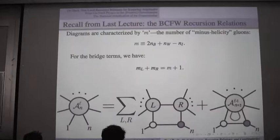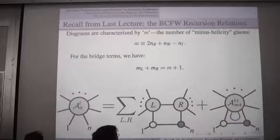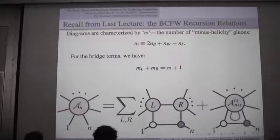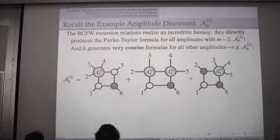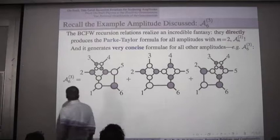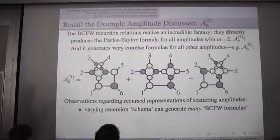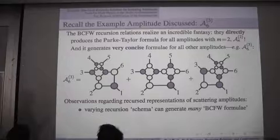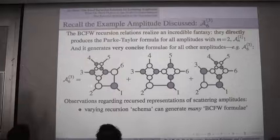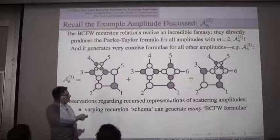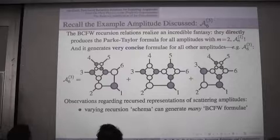We have a lot to cover, so let's get started. Where we left off last time: for everything today, I'm not going to talk about loop level anything—it's just the tree level part of the recursion. I'm just going to be talking about graphs like this. BCFW gave you different-looking formulas for the same expression. The graphs looked very different, and doing BCFW in lots of different ways naturally led to interesting questions—like the fact that none of these three functions are the same, and none of these three are equal to those three. The two different representations just differ by rotating all the labels by one, so they seem very close to each other. But you have two different three-term expressions for the same amplitude, and they're different.